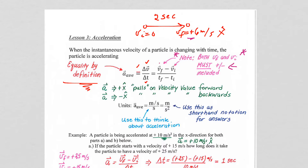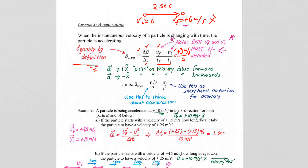Let's go back to our example: going from no speed to positive 6 meters per second in 2 seconds. Our v_initial was 0, our v_final is positive 6 meters per second, and delta t was 2 seconds. So positive 6 divided by 2 is 3 — positive 3 meters per second every second. That's going to be very important in terms of our conceptual understanding of acceleration: meters per second every second. As shown here, we use meters per second squared as shorthand notation when presenting our answers.